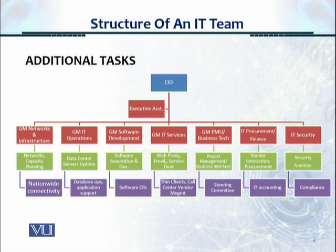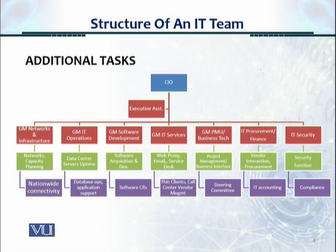These roles also have additional tasks. The GM networks and infrastructure would look after nationwide connectivity, media circuits, and bandwidth circuits. The GM IT operations would look after database operations and application support. The GM software development would look after all software change requests. The GM IT services will look after thin clients and call center vendor management. The PMU and business technology GM would look after the steering committee, meeting minutes, and organizing board meetings. The procurement and finance IT head would look after IT accounting, and the security resource would look after compliance as well.